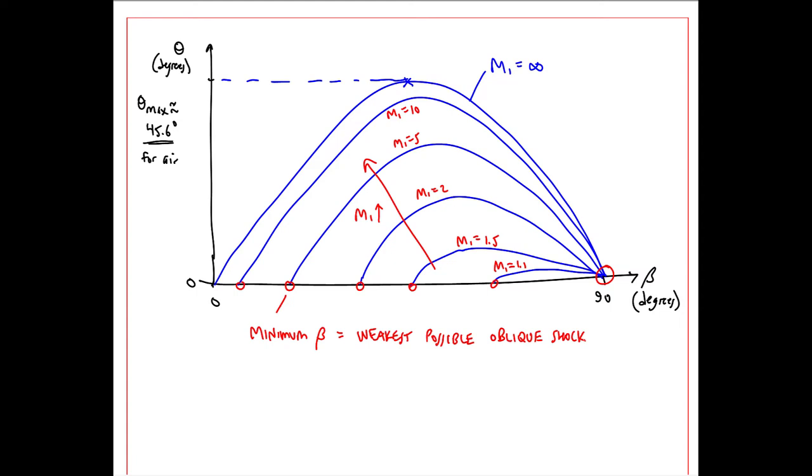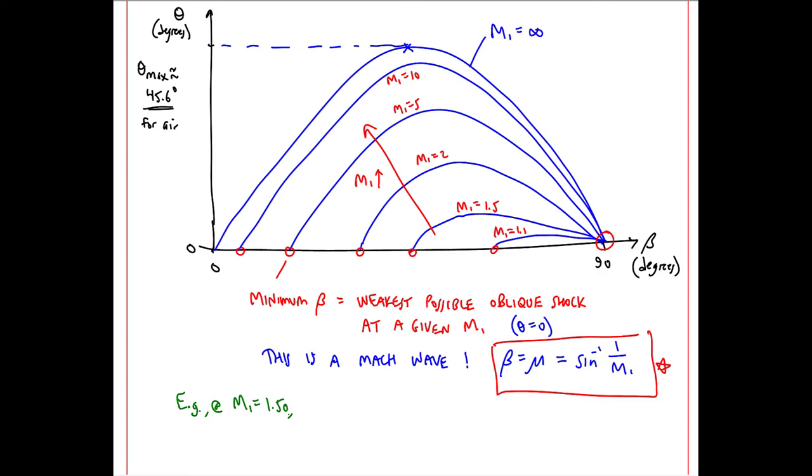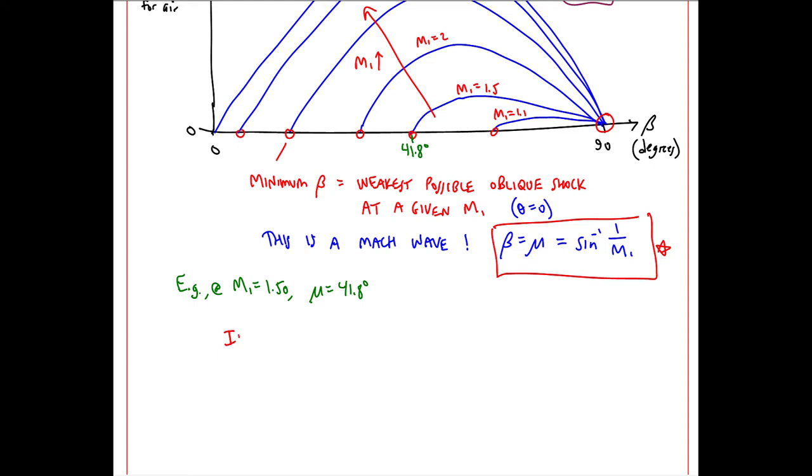So each Mach number also has a unique minimum beta. The minimum beta represents the weakest possible oblique shock at a given Mach number M1. It's where theta equals 0. This is a Mach wave, where beta equal mu, the Mach wave angle, which is arc sine of 1 over M1. For example, at Mach number M1 equal 1.50, mu equal 41.8 degrees. Keep in mind that this plot is for air. It would look similar, but with different values and slightly different shapes for other gases.